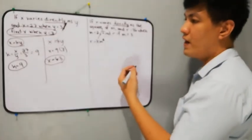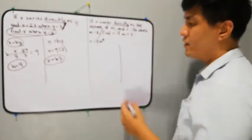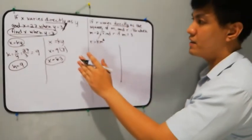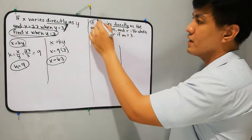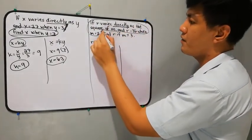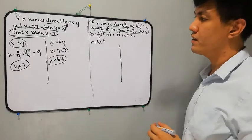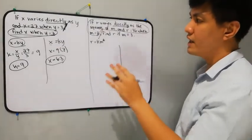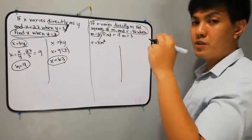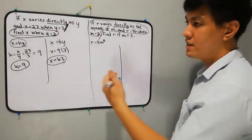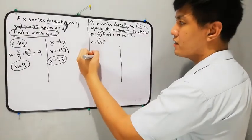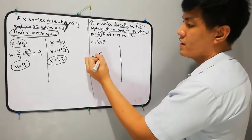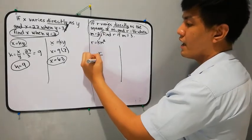The next step is to find the constant. In finding the constant, we use the first part of the statement. We write the formula for the constant. Since it's direct variation, we divide. So k is equal to R over M squared — R came first, so R is on top, over M squared, because we have the square of M.